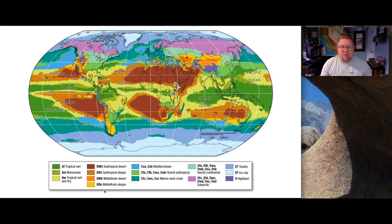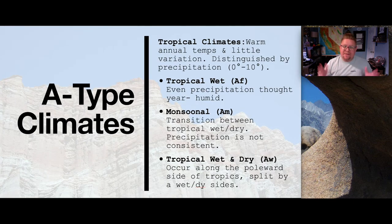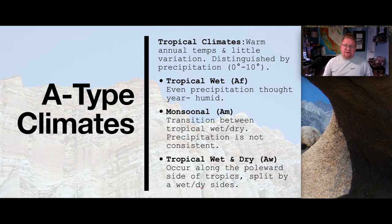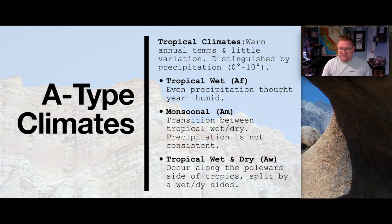Type A climates are tropical — warm annual temperatures with very little variation, distinguished specifically by precipitation, found somewhere between the equator and about 10 degrees North and South. There are three options: AF, AM, and AW. Notice it uses just two letters because there's no temperature variation to distinguish. For precipitation, AF is tropical wet with even precipitation throughout the year. AM is monsoonal — a transition between tropical wet and dry with extreme wet and dry seasons.